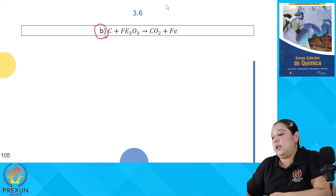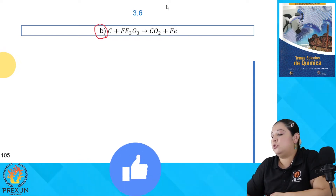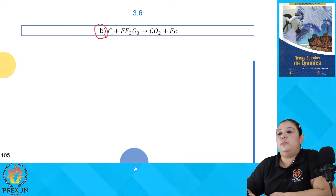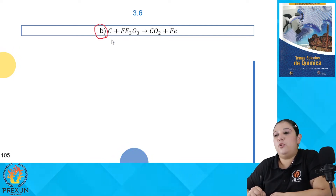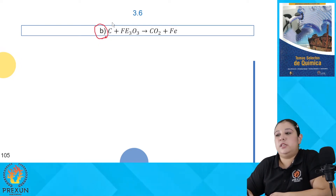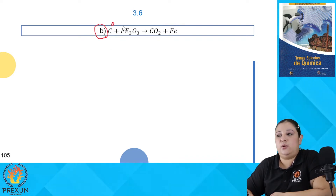Paso número 1: siempre que tenemos una reacción REDOX y vamos a balancearla, vamos a tener que determinar los números de oxidación de todas las sustancias que están participando. Carbono: todo elemento libre tiene número de oxidación igual a cero. Está libre, no está combinado con otro elemento.